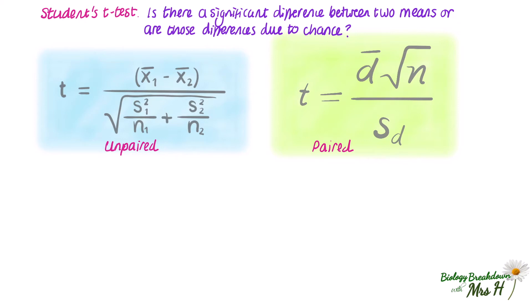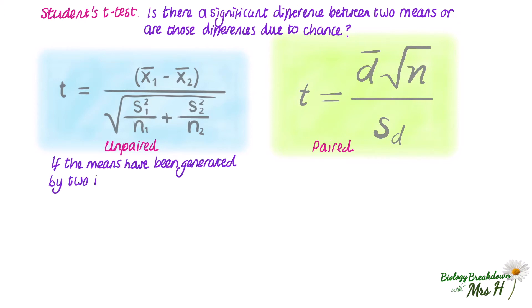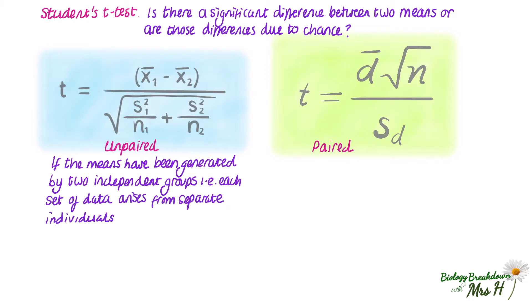You use the unpaired student's t-test if the means have been generated by two independent groups, i.e. each set of data arises from separate individuals. For example, the number of minutes of daily exercise of 15-year-olds in the UK compared with 15-year-olds in Japan. These are completely different sets of individuals generating the data, so we would use the unpaired student's t-test for that.